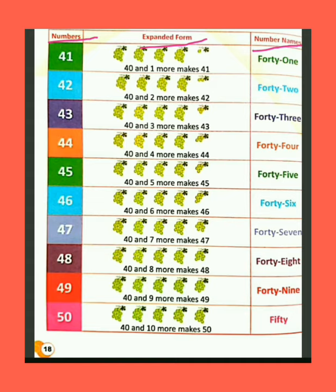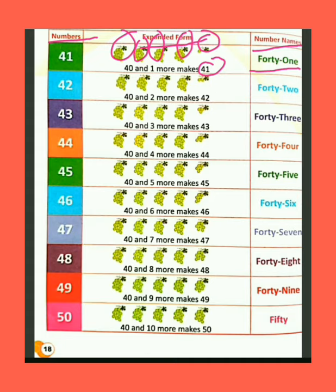We have 40 bunch of grapes. If we add one more grapes bunch, then the total bunch of grapes are 41. The spelling of 41 is F-O-R-T-Y (40) + O-N-E (1) = 41.